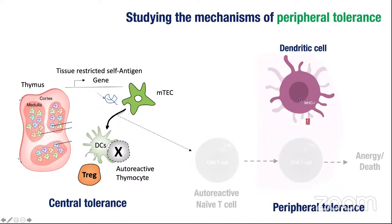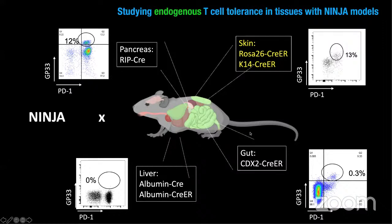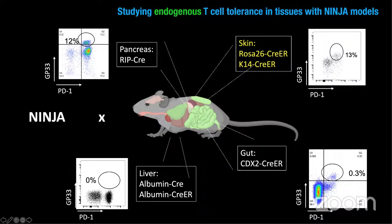We wanted to study whether this was true using the NINJA model. We could turn on antigens peripherally and study endogenous T cell responses against those antigens using MHC class I tetramers — something different from what had been previously done. We turned on antigens in the pancreas, colon, skin, and liver. The liver was the outlier where we don't see T cell responses. In both the pancreas and the gut, we see pretty robust antigen-specific T cell responses. When we look in the skin using a ROSA26-CRE and painting on tamoxifen, we get a fairly robust T cell response, which will be the focus of what I'll talk about today.